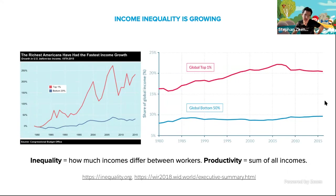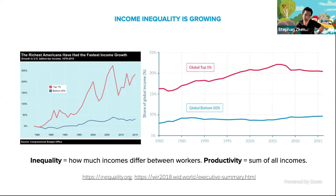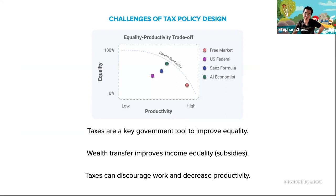If we look at the world, one big motivation for us is that one of the biggest socioeconomic problems today is economic inequality. If we look at incomes in the US historically, the top 1% has seen income grow much faster than the bottom 20%, and this is actually a global trend. Inequality means how much incomes per year differ between different workers in the economy, and productivity is the sum of all the incomes. This gap is growing, and there are many negative downstream effects which are well documented. Taxes are a key government tool to improve equality and minimize the harm these downstream effects can cause.